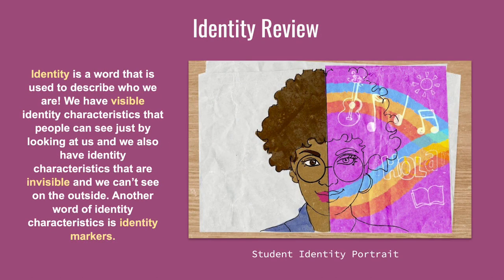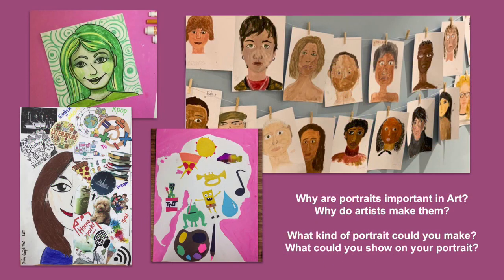So let's review. Identity is a word used to describe who we are. We all have visible identity characteristics that people can see just by looking at us, and we also have identity characteristics that are invisible. Another word for identity characteristics is identity markers. Now that you've learned much more about portraits and self-portraits, why do you think portraits are important in art? Think to yourself: Why do artists make them? What kind of portrait could you make? What could you show in your portrait?